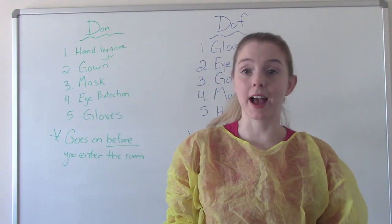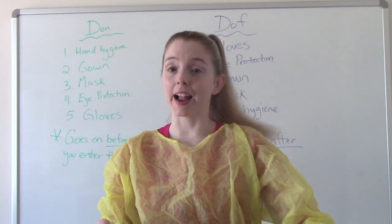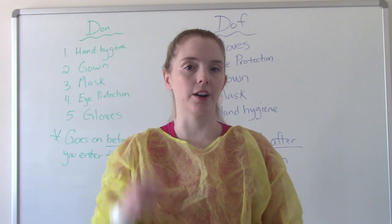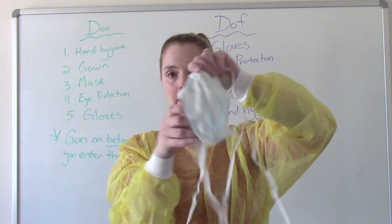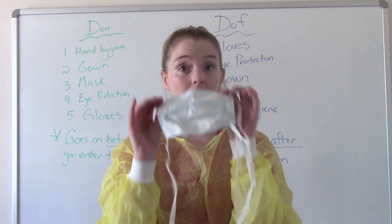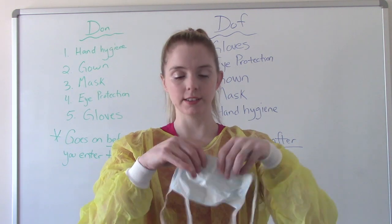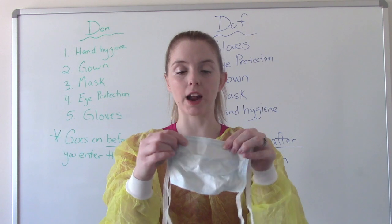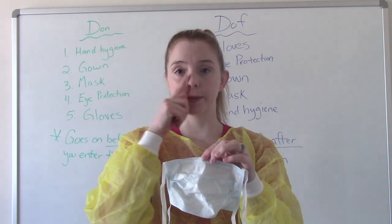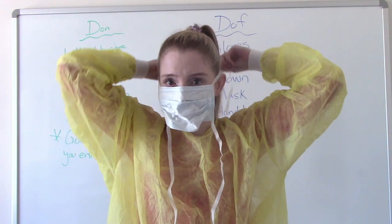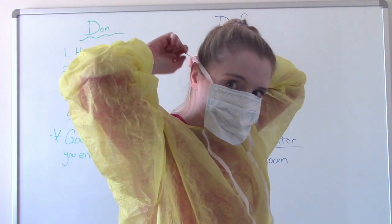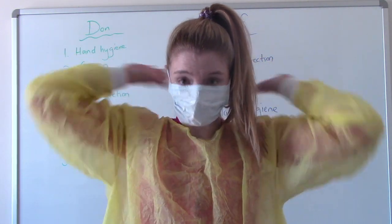The next step is our mask. There's a variety of different masks you will see — some have a hook around the ear, some have ties on the ends. If you have the kind with ties, the blue part goes to your face, and there's a flexible wire on one end that goes on top because it goes around your nose. The first string goes above your ear like glasses would, and the second part goes around your neck.